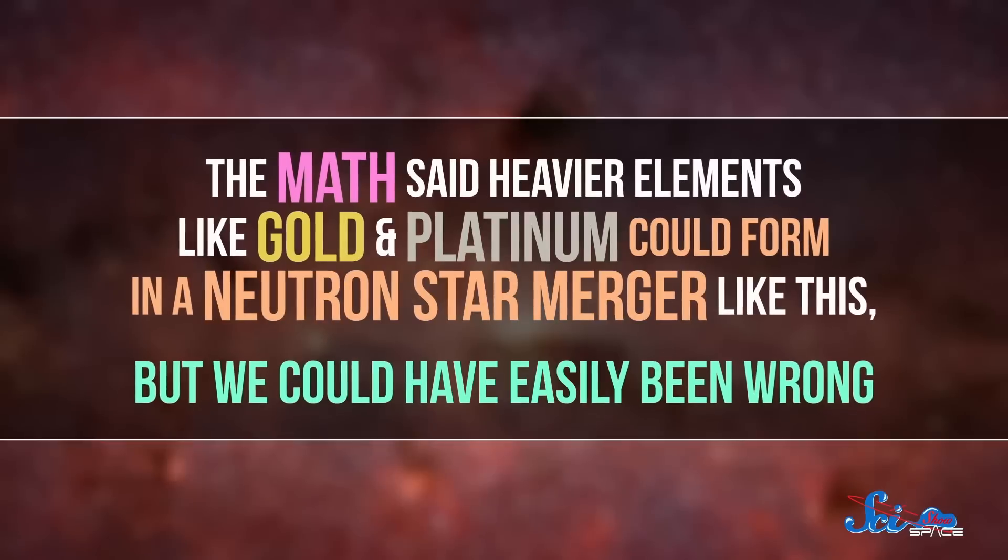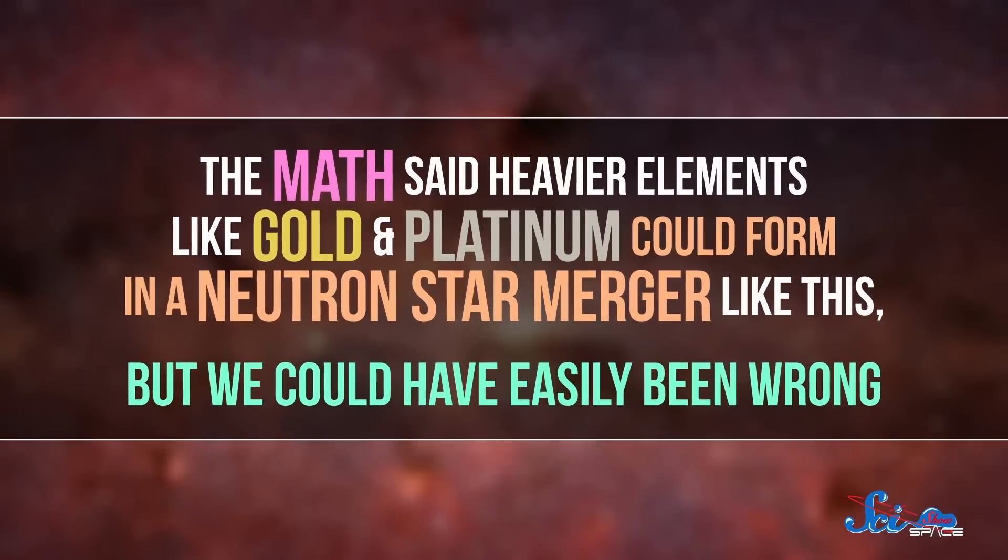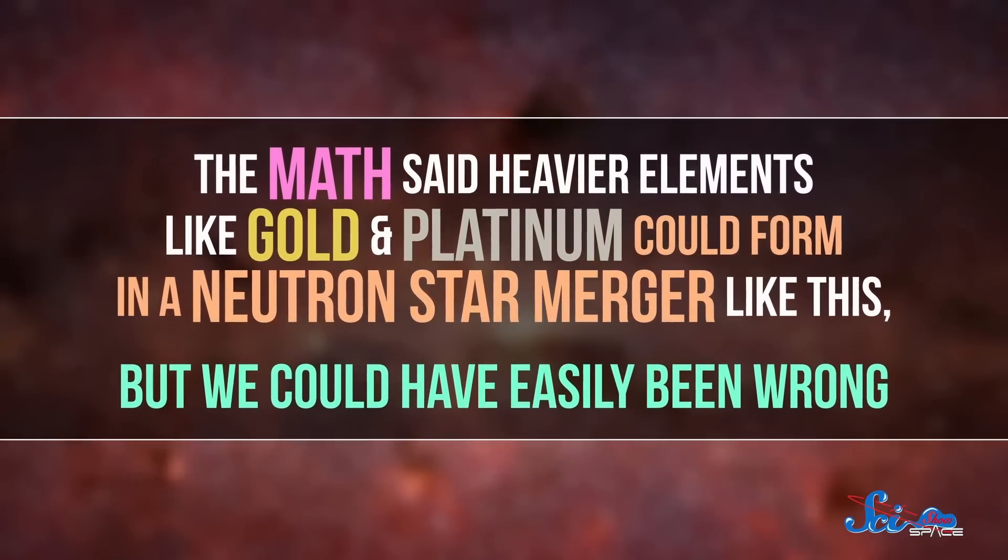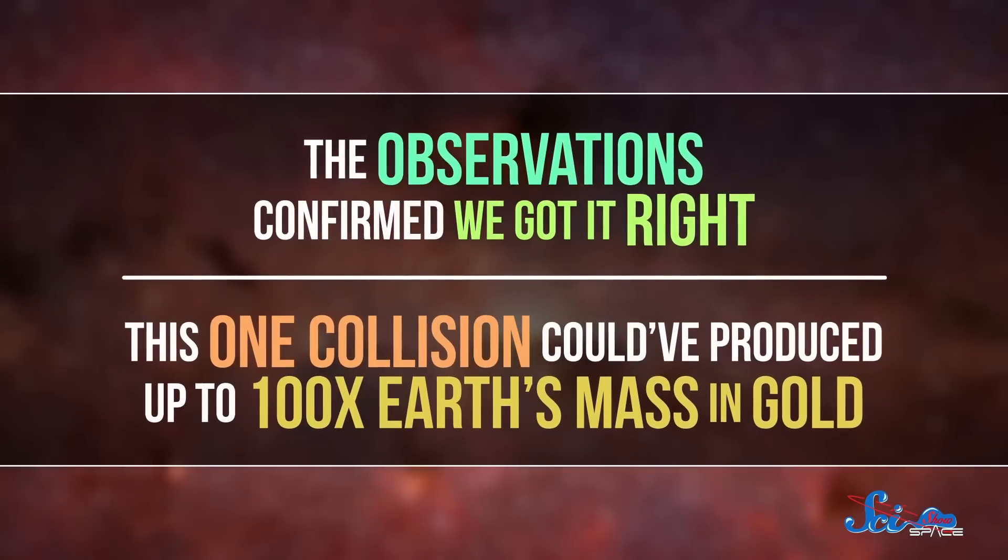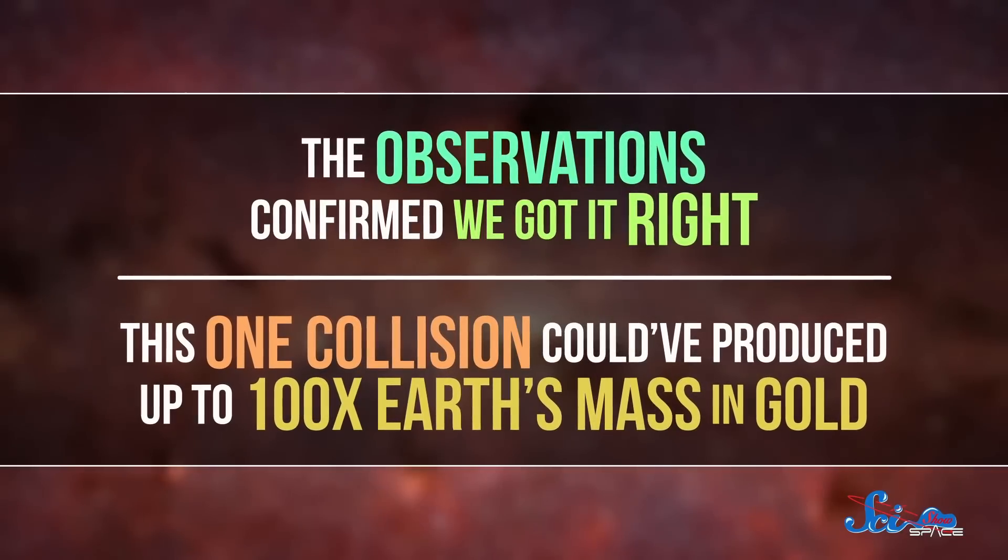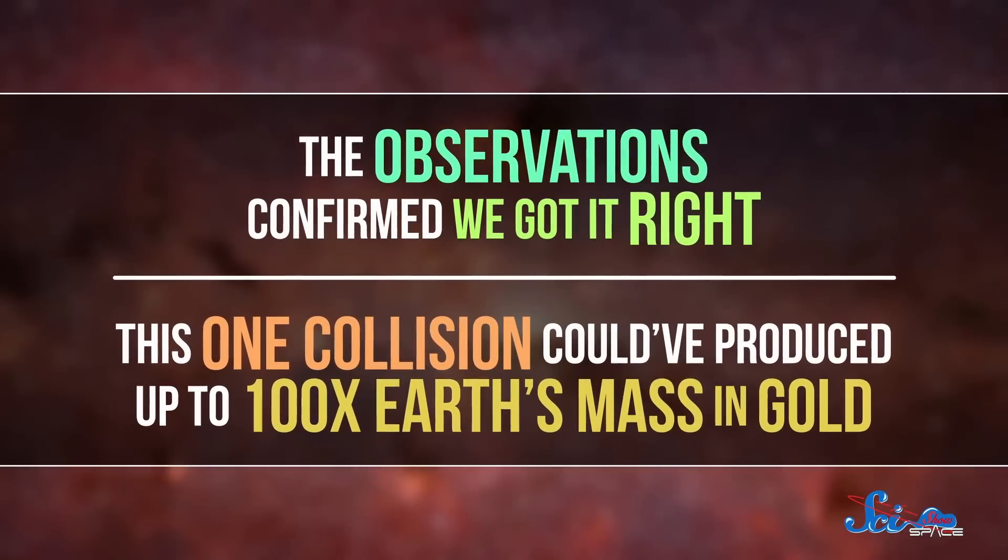We knew that elements lighter than iron could form in supernovas, but nothing heavier than that. The math said heavier elements like gold and platinum could form in a neutron star merger like this, but we could have easily been wrong. But the observations confirmed we got it right. This one collision could have produced up to 100 times Earth's mass in gold. So that's another giant mystery solved.